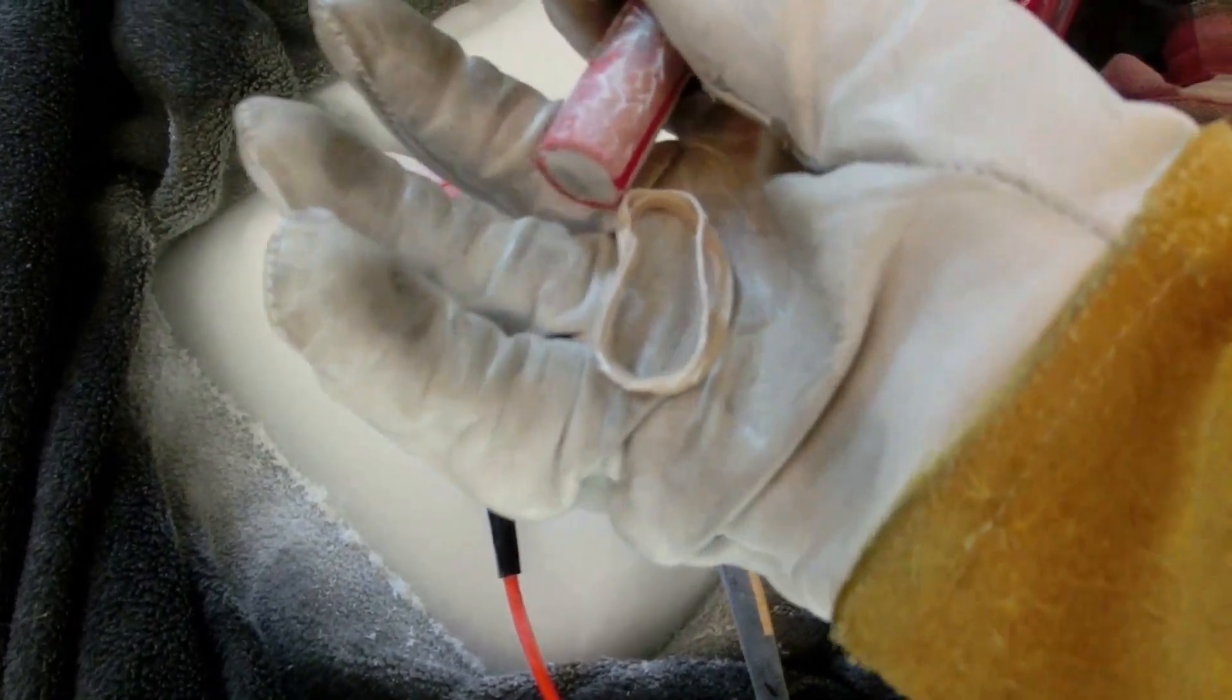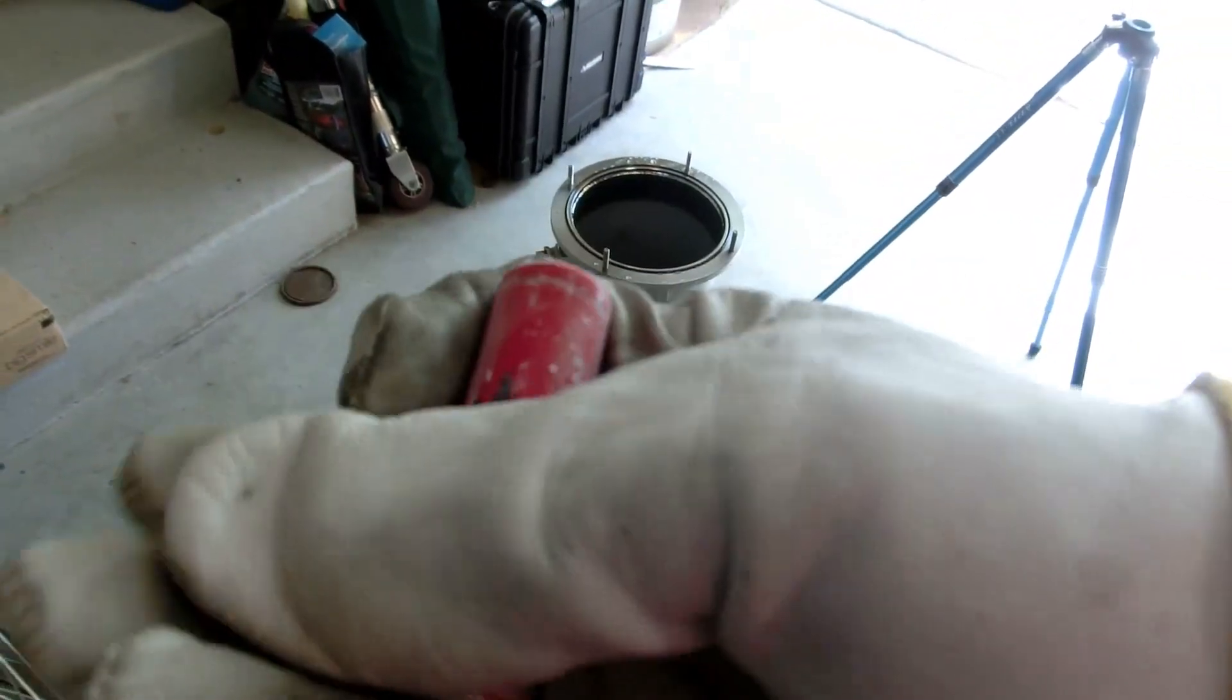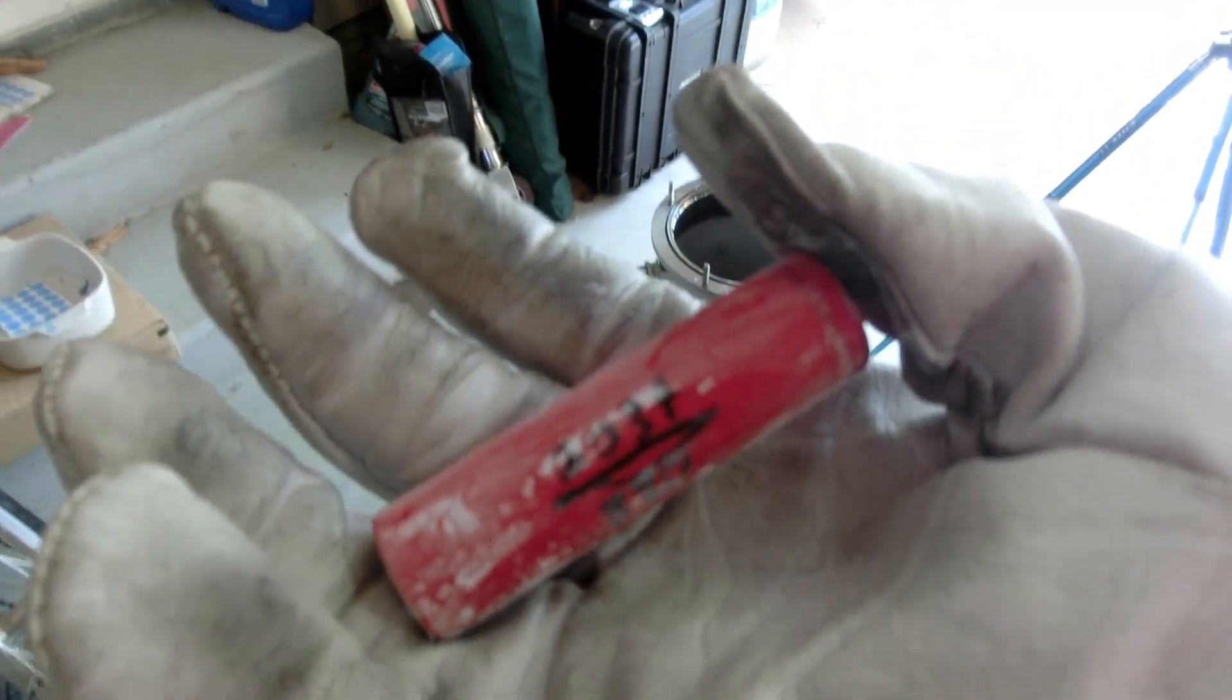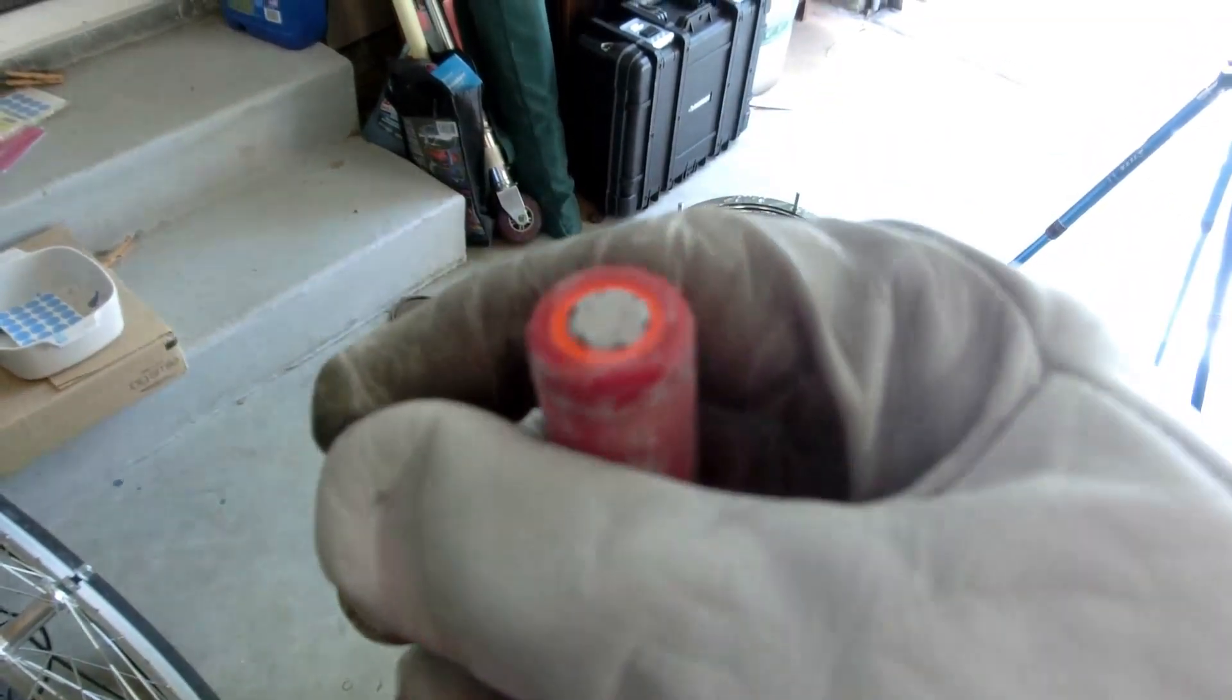That rubber band isn't really elastic-y right now. Because, when I did the discharge test before, it only gave out 880 milliamp hours of capacity. And, it took 2 amp hours of capacity, so it burned off a lot of heat.